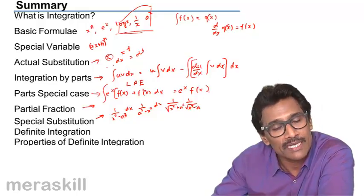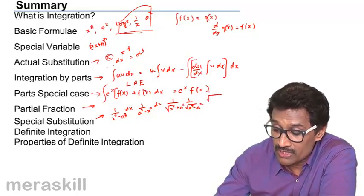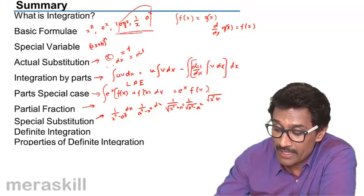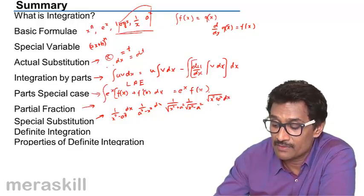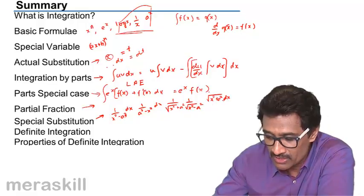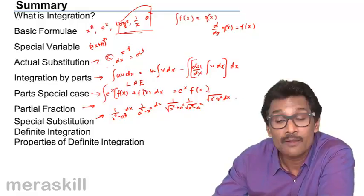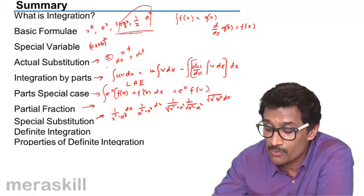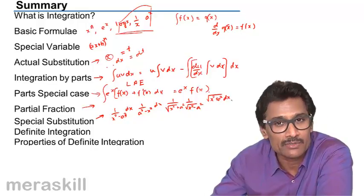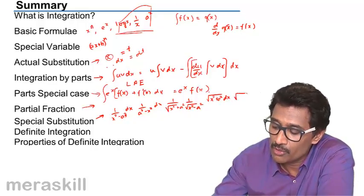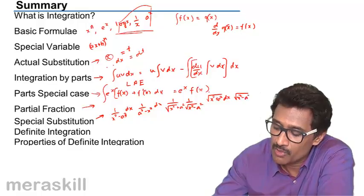We also did integral of root x square plus a square dx, which is going to be x by 2 into this plus a square by 2 into log x plus root x square plus a square. In the same way, we also did similar formula for this, only with a minus sign in between.